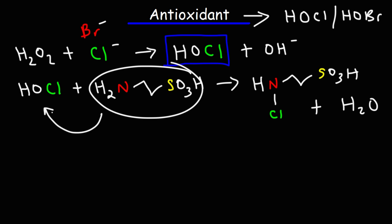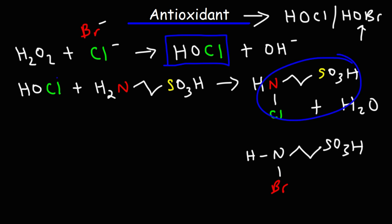Taurine reacts with hypochlorous acid to produce taurine chloramine, or if it reacts with hypobromous acid it can produce taurine bromamine. So these compounds are much less toxic than hypochlorous acid, and the body can easily excrete them in the urine. So that's how taurine works as an antioxidant, in that it can reduce these two molecules, hypochlorous acid and hypobromous acid, by the production of taurine chloramine and taurine bromamine.